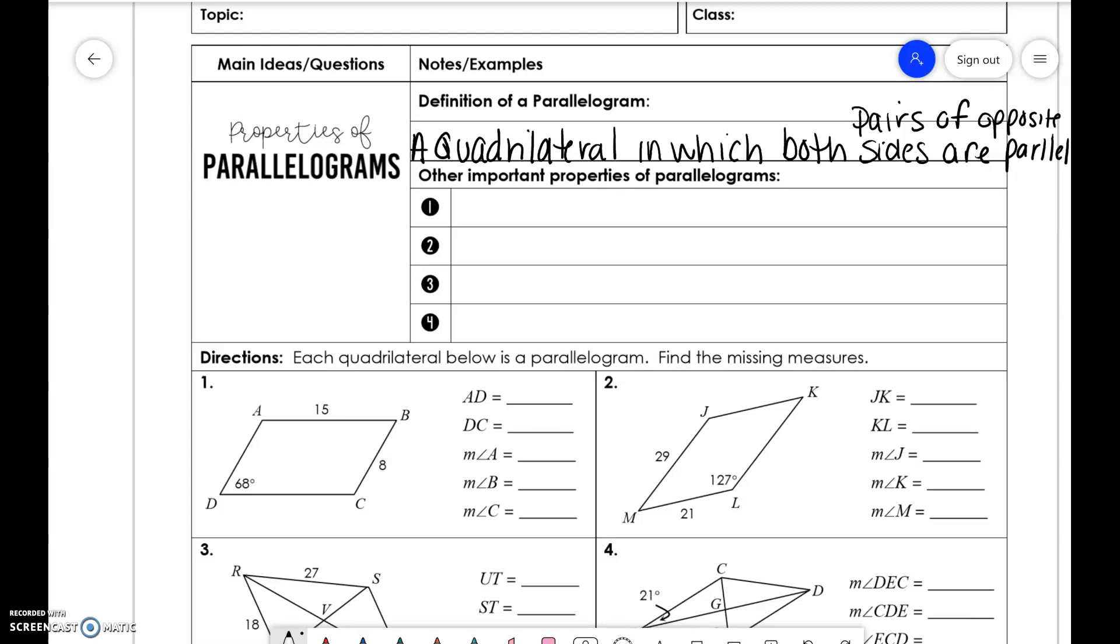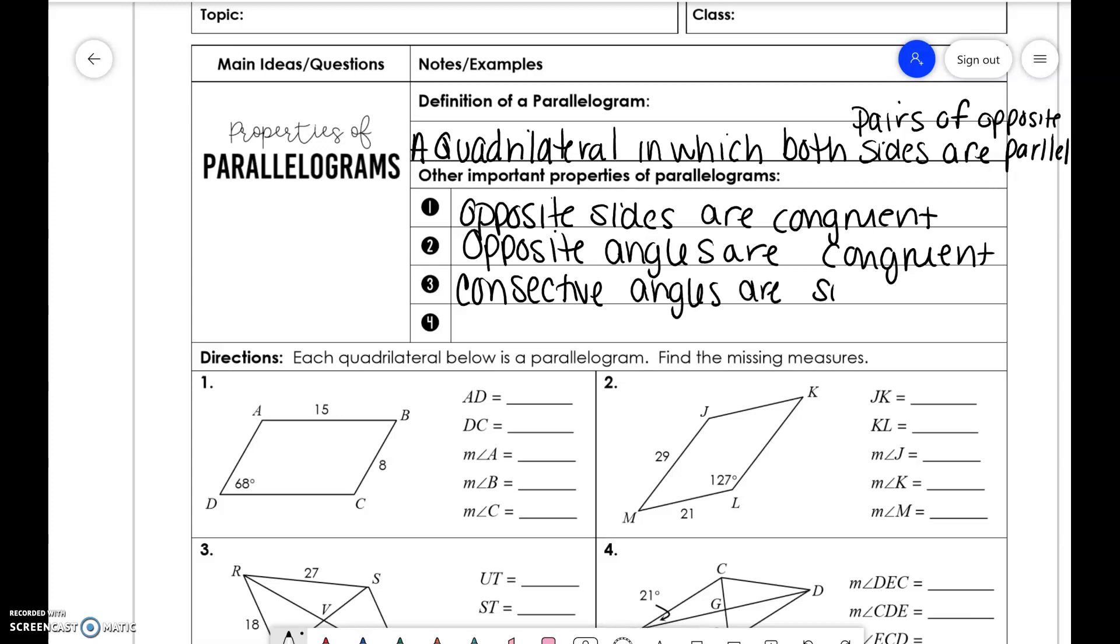With parallelograms, we think of rectangles, squares, and rhombuses. Those would be parallelograms. With parallelograms, they also have a couple other properties. The first one being opposite sides are congruent. Second one, opposite angles are congruent. The third one being consecutive angles are supplementary. And the last one being the diagonals bisect each other.